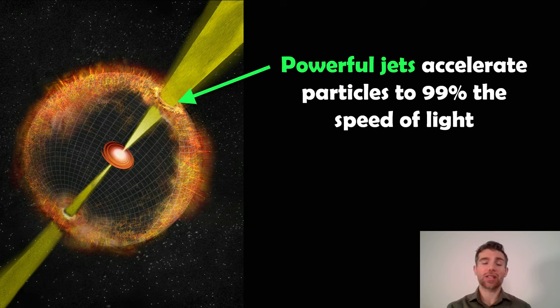Those jets then punch through this ejected material. They can accelerate the particles in that ejected material to 99 percent the speed of light. That's where these enormously high kinetic energies actually originate from. It's these jets that are accelerating these particles in the supernova remnant, and that is what gives us the hypernova.